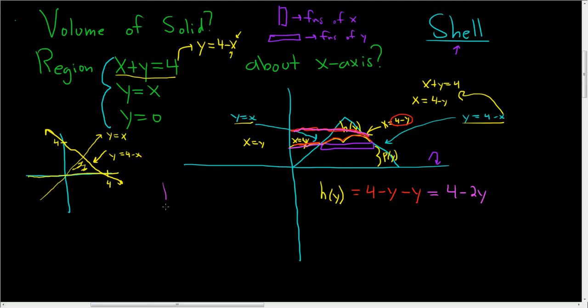If that doesn't make sense, think about numbers. Like if it was 10 and 3, this is x equals 10, and this is x equals 3. Obviously, this distance is 7, but you can think of it this way. You can think of it as 10 minus 3, which is 7. Same thing here, it's 4 minus y minus y, which is 4 minus 2y.